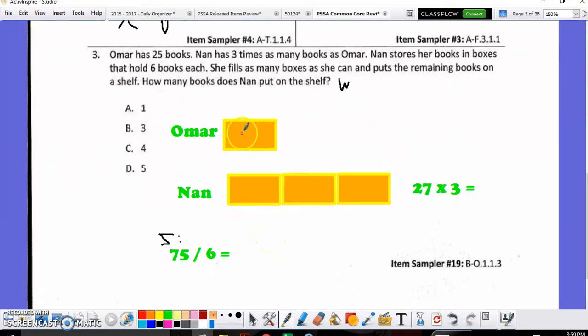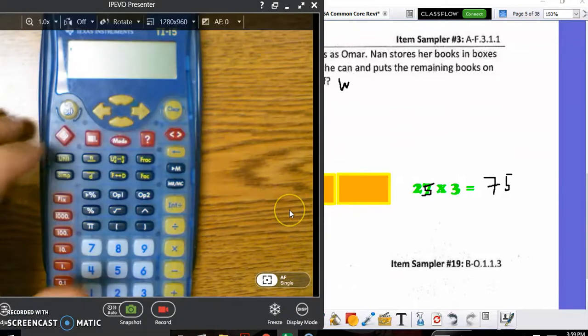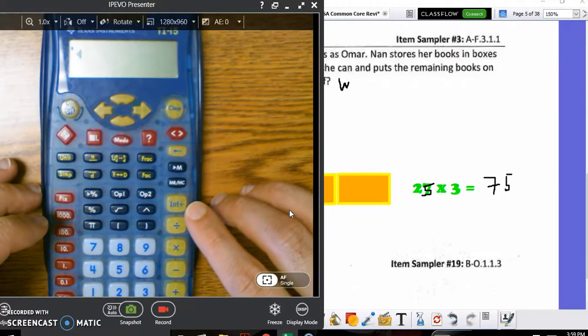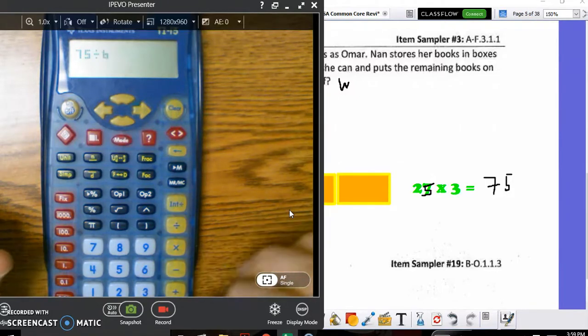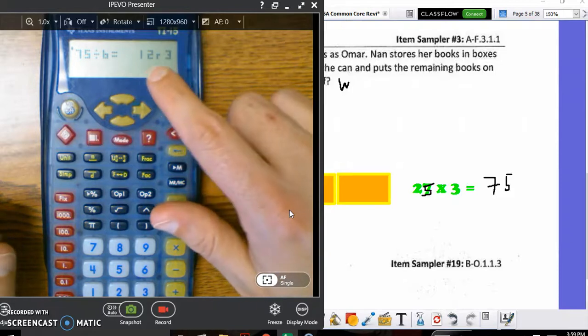We know that Omar has twenty-five books. And Nan has three times as many. So, if this is twenty-five, so is that and that. Which means twenty-five times three gets me seventy-five. We also know that six books is what you're putting on each shelf. So, if I take the seventy-five that Nan had and divide it by six, I'll be able to see the remainder. With your calculator here at school, you'll be able to use this button right here to find the remainder. The integer divide. I-N-T divide. So, I take seventy-five and I use the I-N-T divide by the six number of books I can put on each shelf. And I get twelve with a remainder of three.